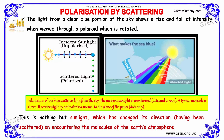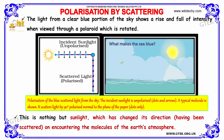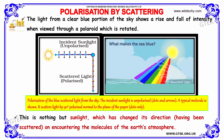Polarization of the blue scattered light from the sky: the incident sunlight is unpolarized. A typical molecule is shown, and it scatters light by 90 degrees, polarized normal to the plane of the paper.